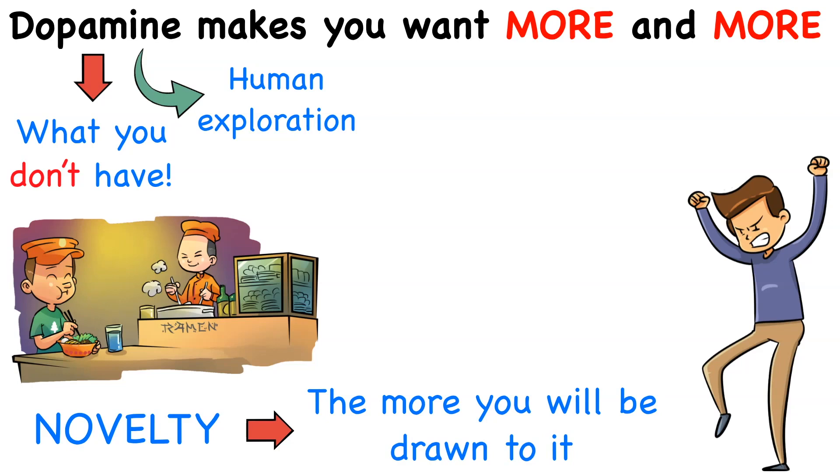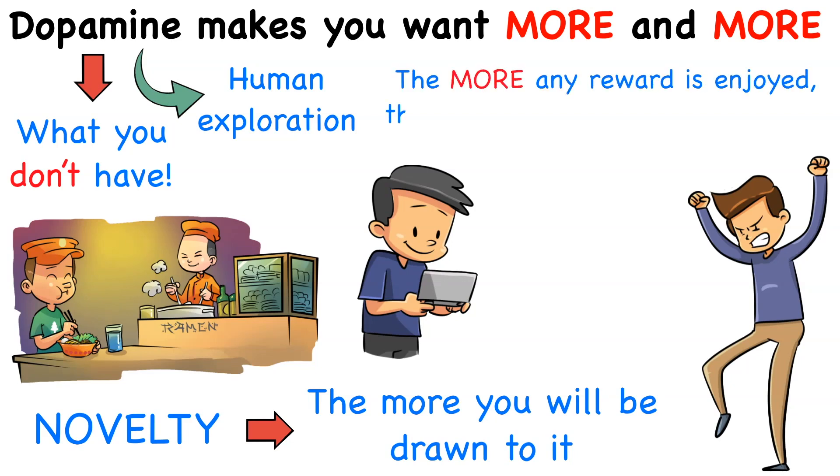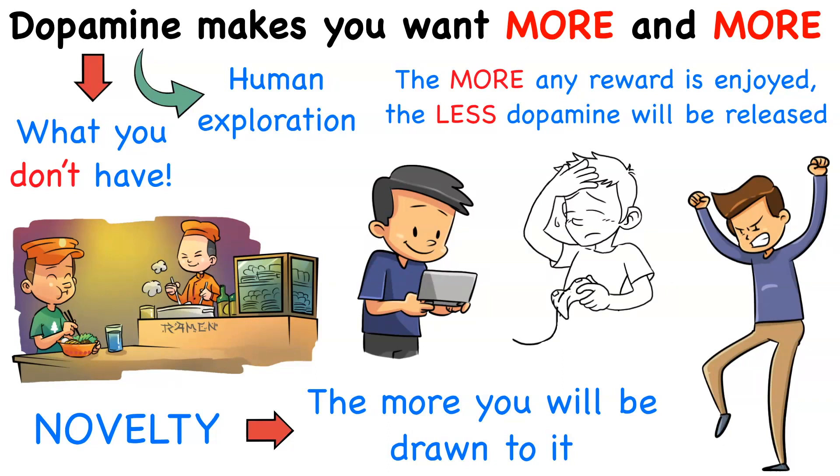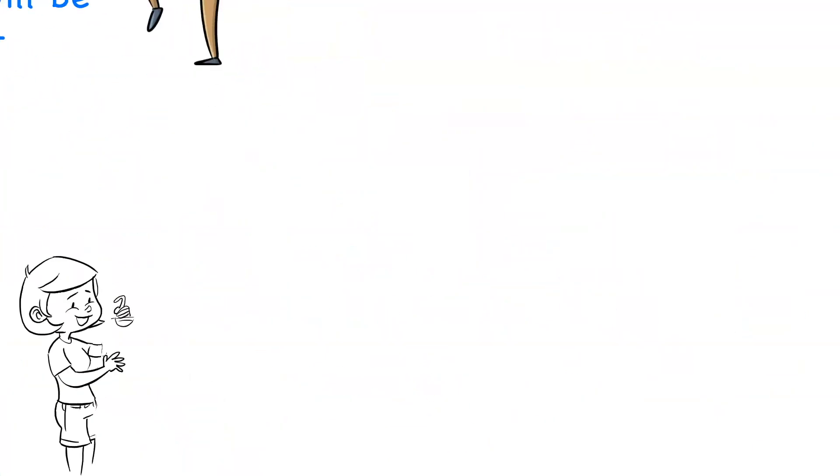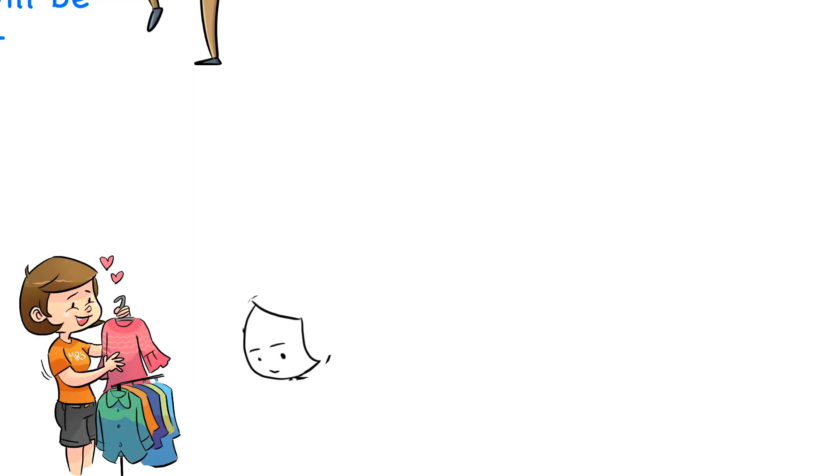Only unexpected and novel rewards trigger dopamine. That's why things like porn and gambling are so addictive. Every new video and every new bet will bring forth completely new rewards. On the other hand, the more any reward is enjoyed, the less dopamine will be released. Having the same meal and watching the same movie again and again will turn out to be boring at some point, because there's nothing new in them. Dopamine doesn't give you pleasure for the things you have. Once you get it, dopamine shuts off.